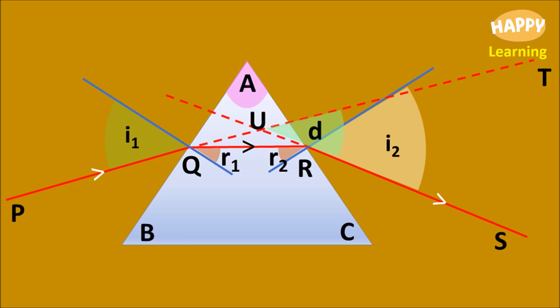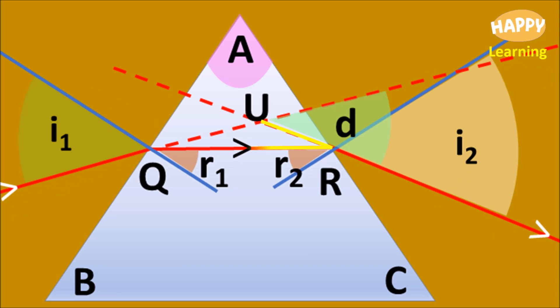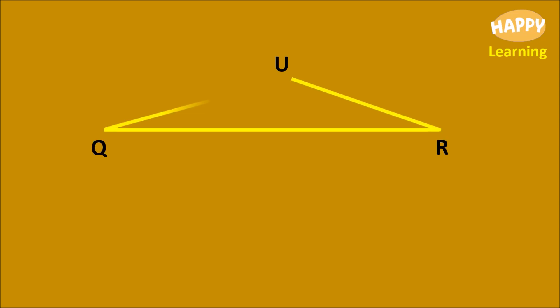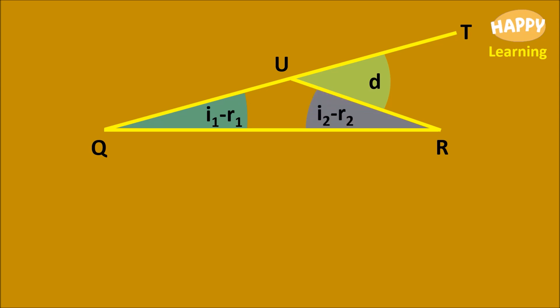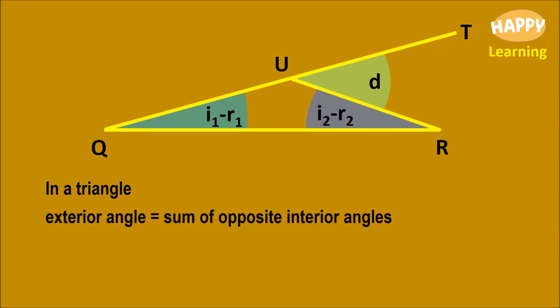So this is the final picture. Let us observe closely. Observe triangle URQ and its interior angles. In triangle URQ, this angle is one of the exterior angles, and the other two are interior angles. By the exterior angle theorem, D is equal to (I1 minus R1) plus (I2 minus R2). After rewriting, we get D equals I1 plus I2 minus (R1 plus R2). Let this be equation number 1.